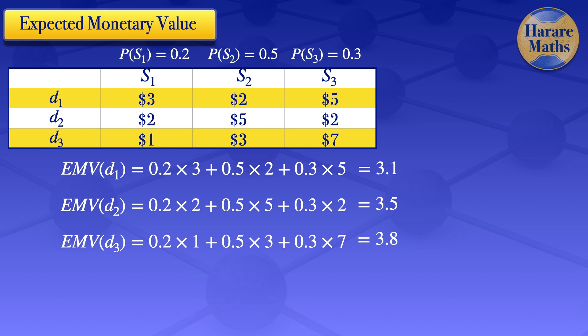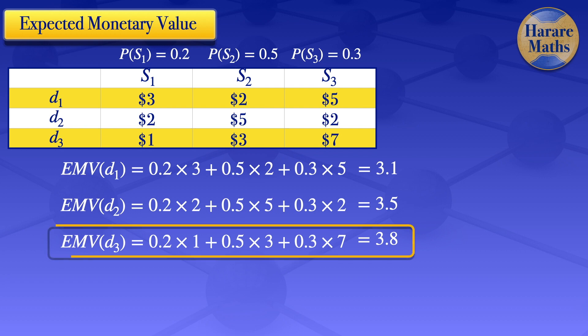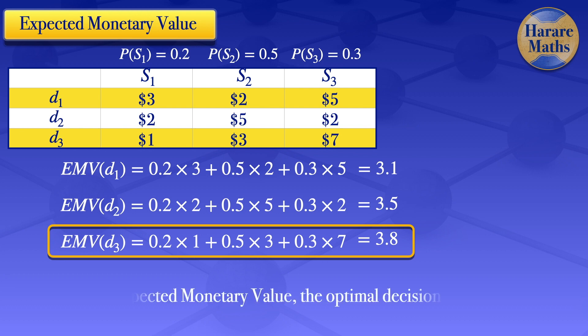To see which decision we have to choose, we look at the decision which has the largest expected monetary value. The one with the largest expected monetary value is the one with 3.8, which is decision number 3. So using the expected monetary value, the optimal decision is decision number 3.